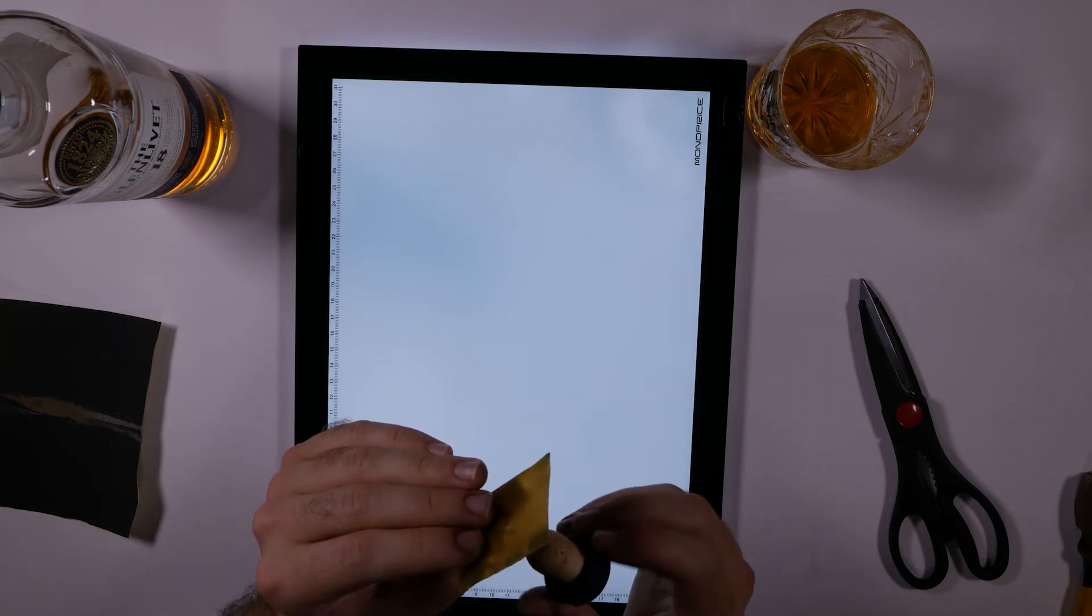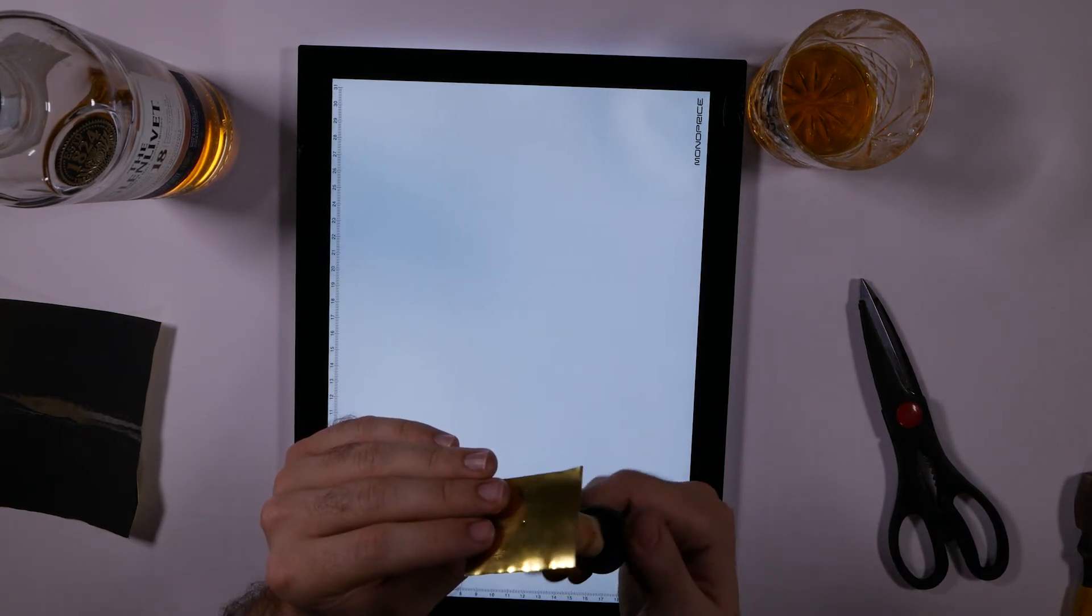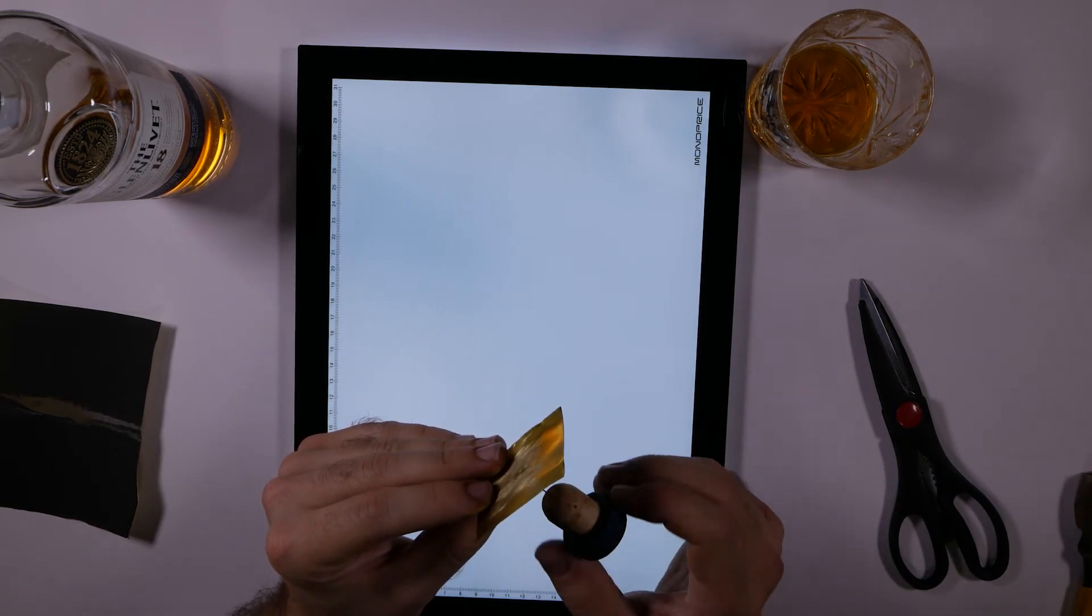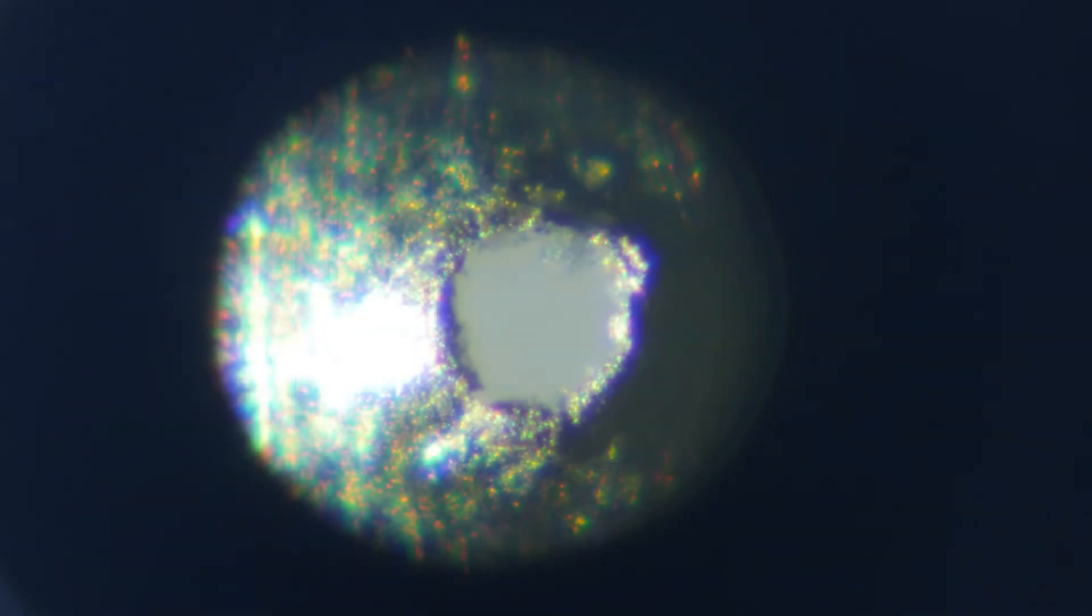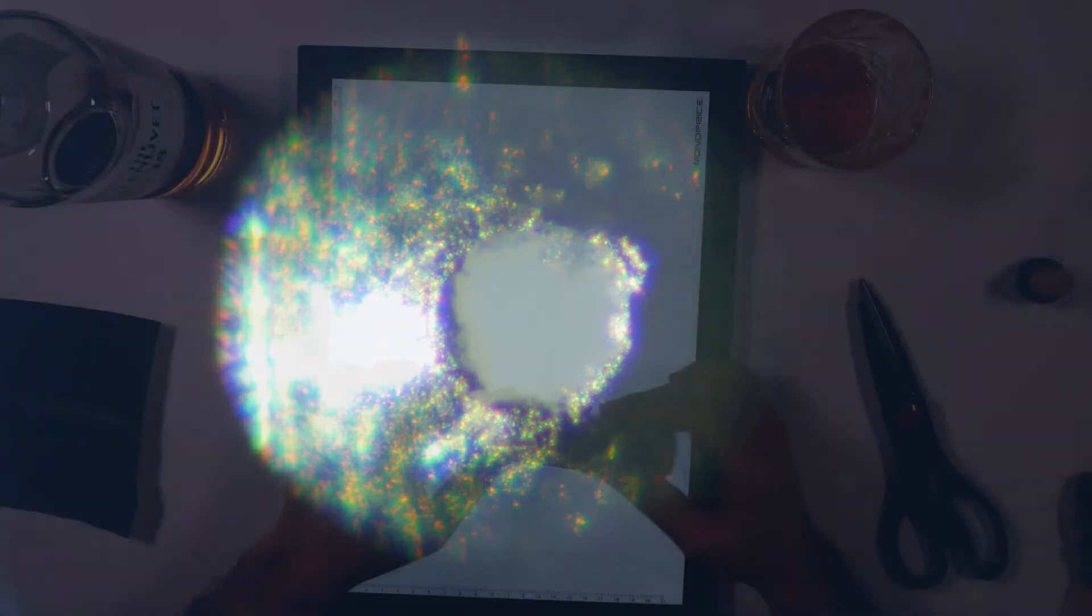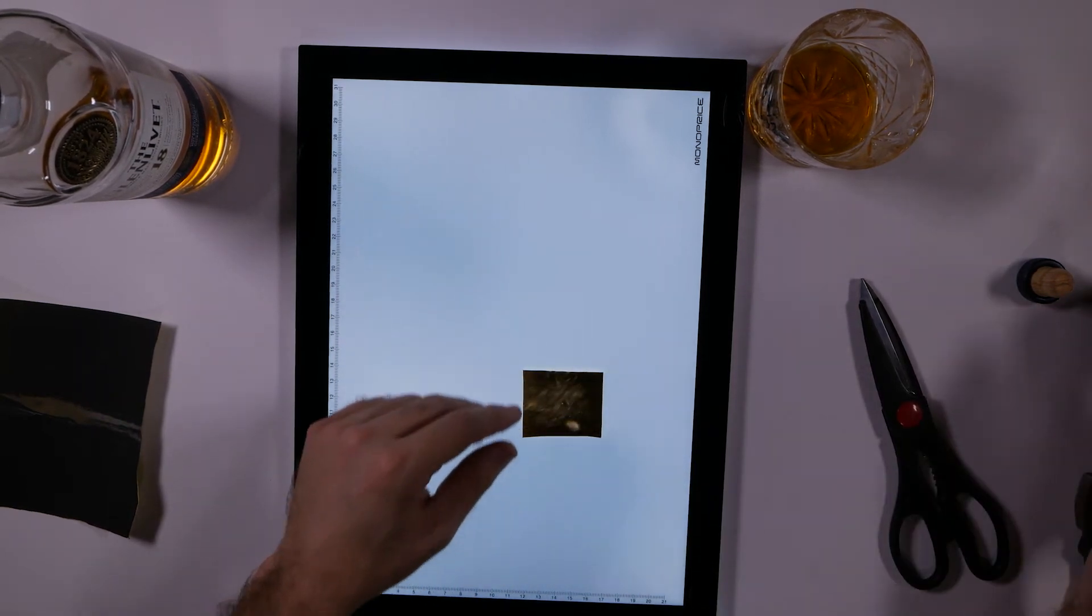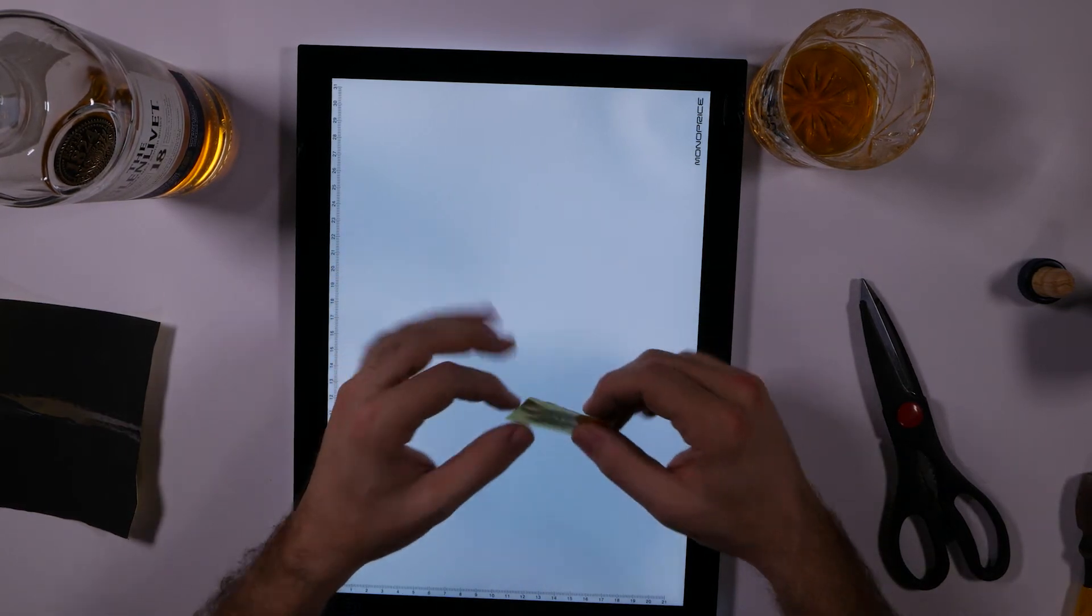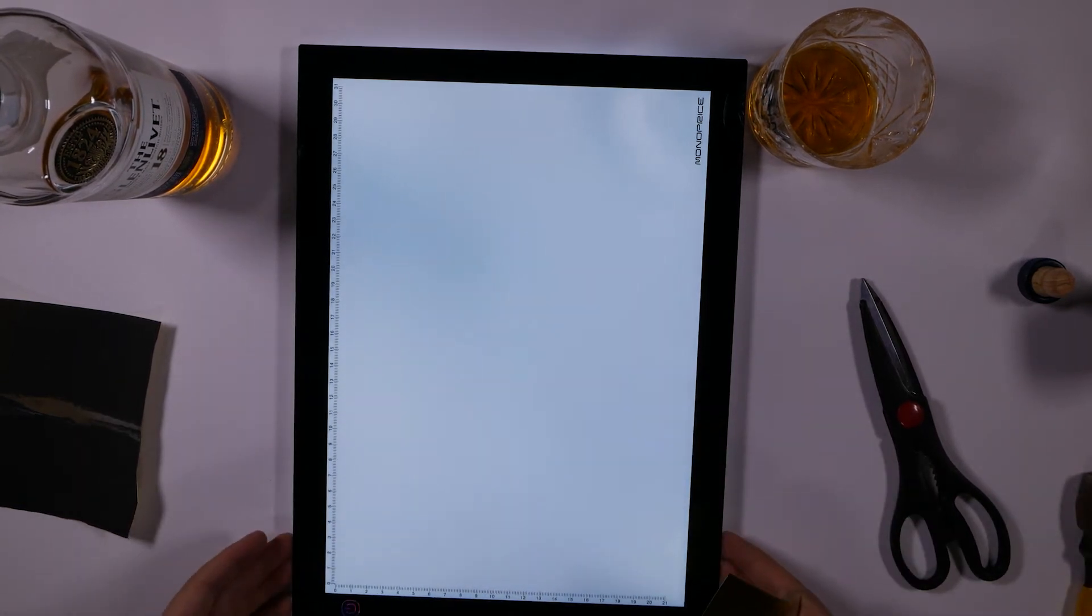Because remember, all our equations from the previous video are based off of circular apertures. And again, we can check this using our handy dandy microscope here. And if you don't have access to something like this or a magnifying glass, you can always check with a flatbed scanner. You can scan this to see how round the hole is.